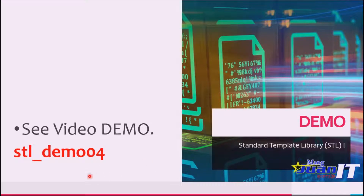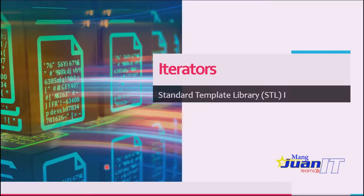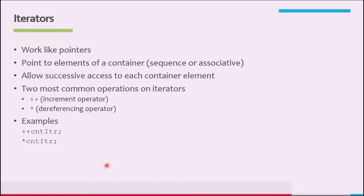I want you to see video demo STLDEMO04, which illustrates how to use the function copy and an ostream iterator in a program. STLDEMO02 through STLDEMO04 further clarified that iterators are quite important for efficiently processing the elements of a container. Let us discuss iterators in some detail. Iterators work just like pointers. In general, an iterator points to the elements of a container, whether sequence or associative. With the help of iterators, we can successively access each element of a container.